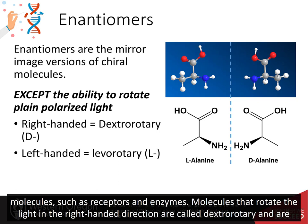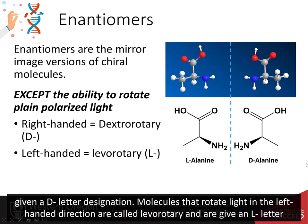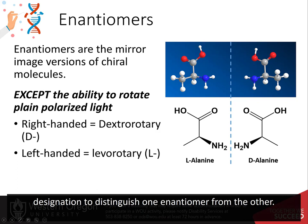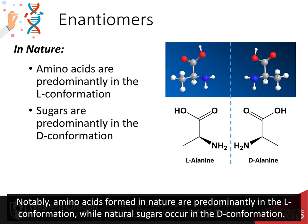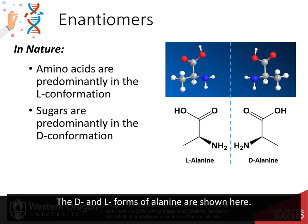Molecules that rotate light in the right-handed direction are called dextrorotary, and they are given the D-letter designation. Molecules that rotate light in the left-handed direction are called levorotary and are given an L-letter designation to distinguish one enantiomer from the other. Notably, amino acids formed in nature are predominantly in the L-conformation, while natural sugars occur in the D-conformation. The D and L forms of alanine are shown here.